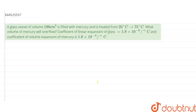The question is: a glass vessel of volume 100 centimeter cube is filled with mercury and is heated from 25 degree centigrade to 75 degree centigrade. What volume of mercury will overflow? The coefficient of linear expansion of glass is given as 1.8 into 10 to the power minus 6 per degree centigrade, and the coefficient of volume expansion of mercury is 1.8 into 10 to the power minus 4 per degree centigrade.